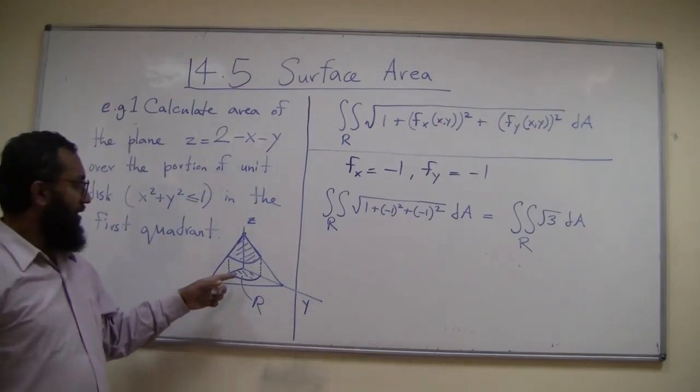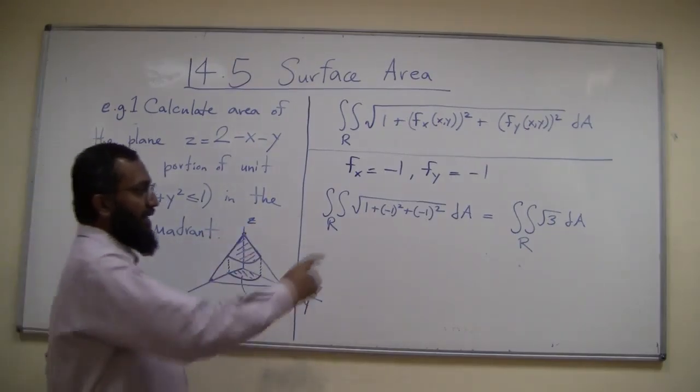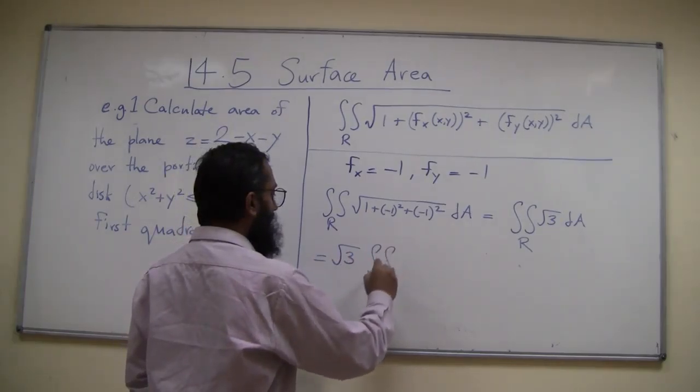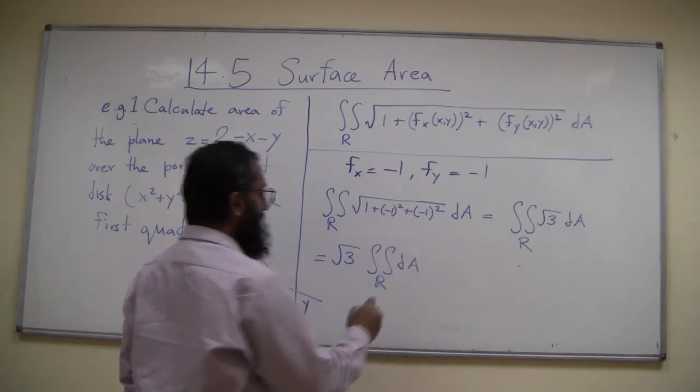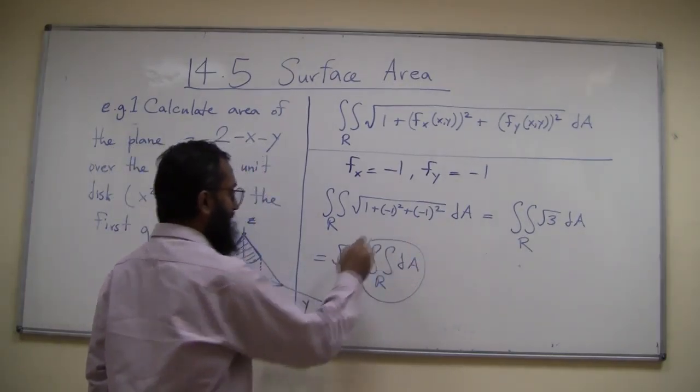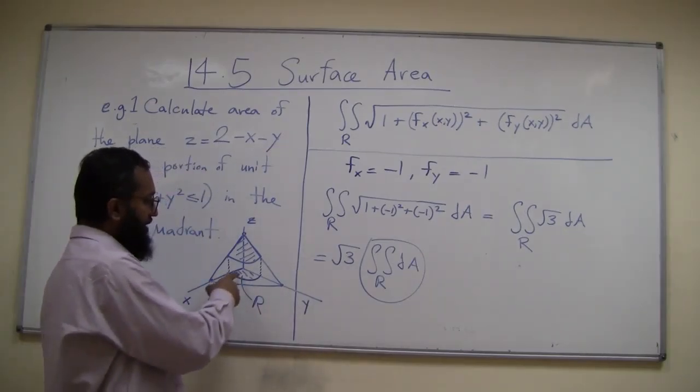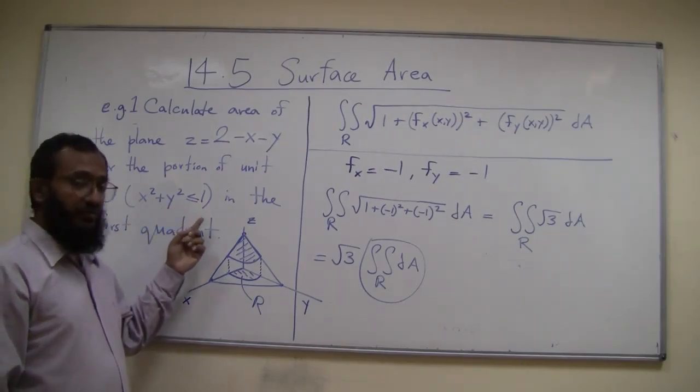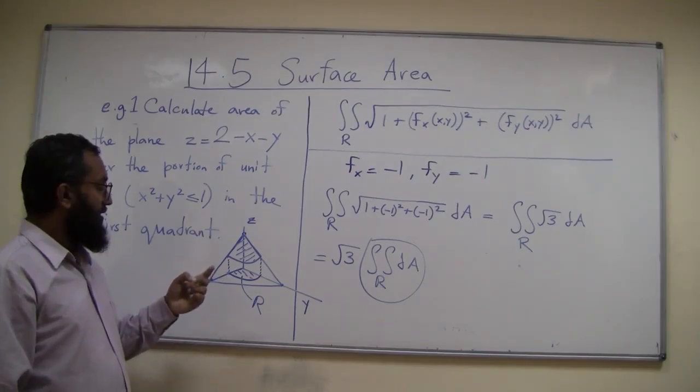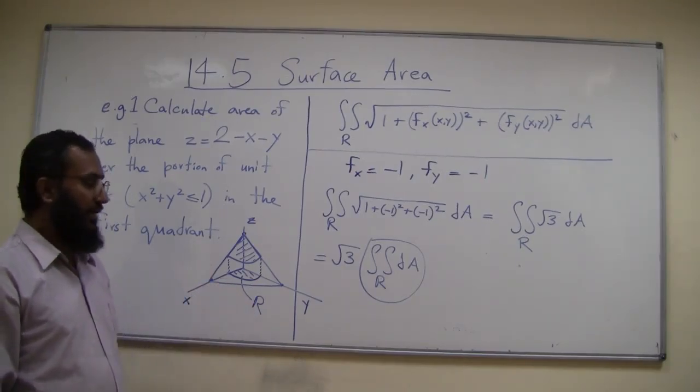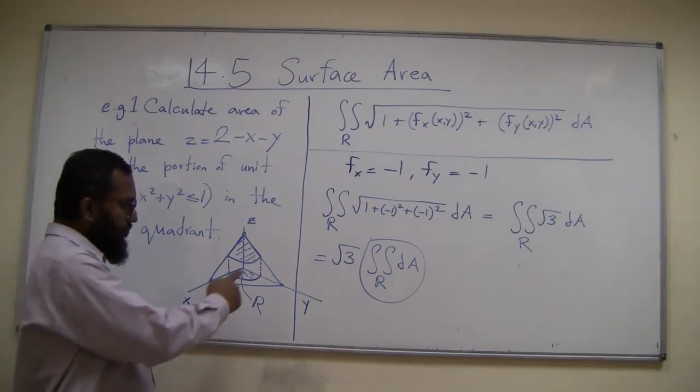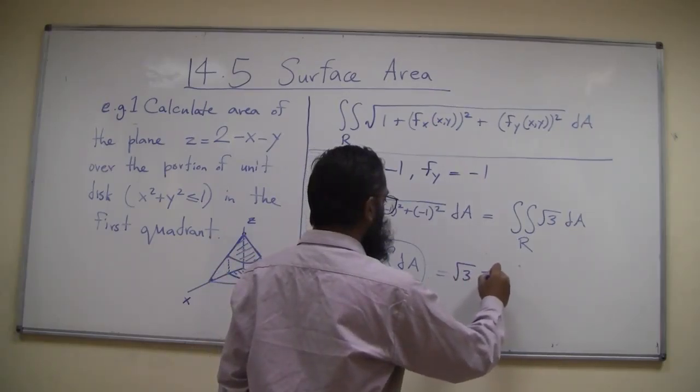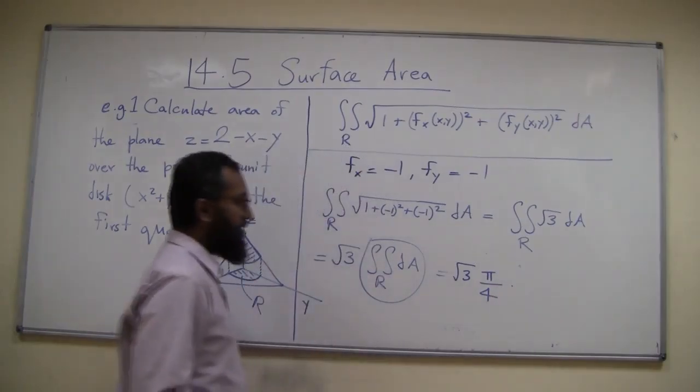I have not set up the limits of R. As a circular region I have to do that, but I notice that I can pull out the square root of 3, and then I get the integral of R dA, which is just the area of the region. The area of this region is one quarter of a unit disc. The area of a circle of radius 1 is pi, so this is pi over 4. This equals square root of 3 times pi over 4. This is the answer.